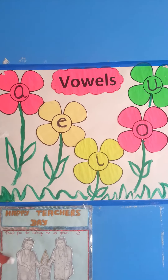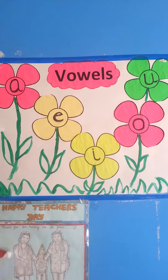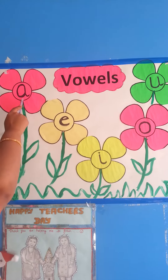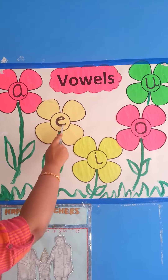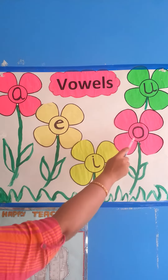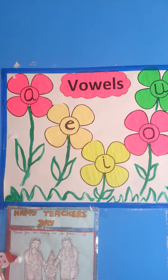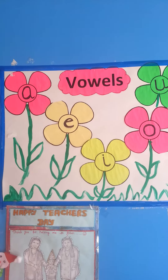Look at here — these are small letters: A, E, I, O and U. They are vowels.